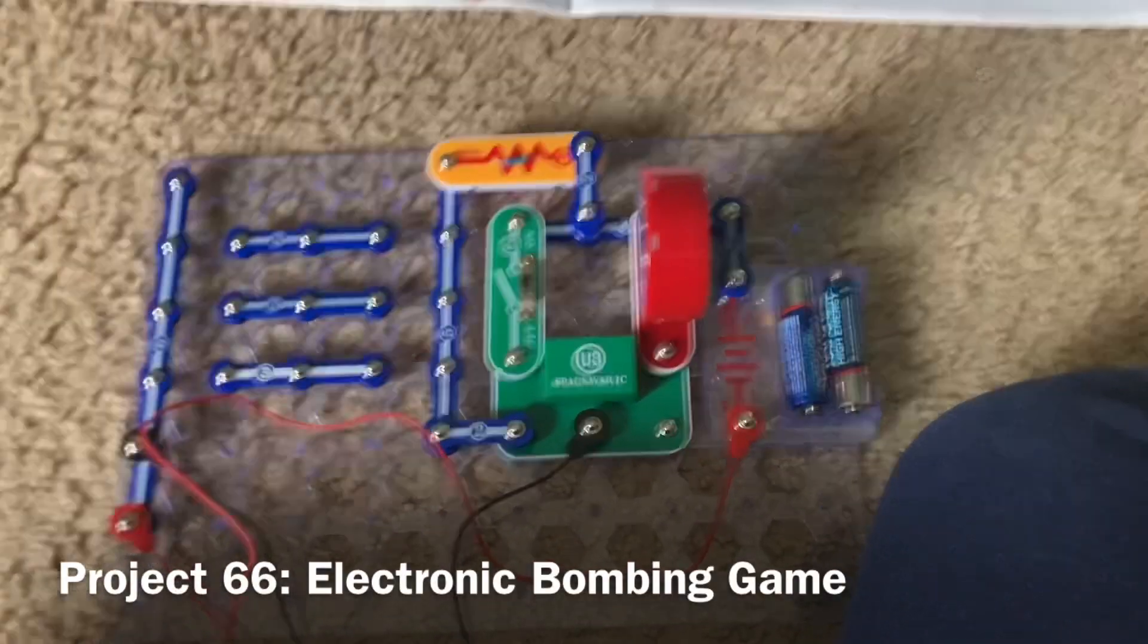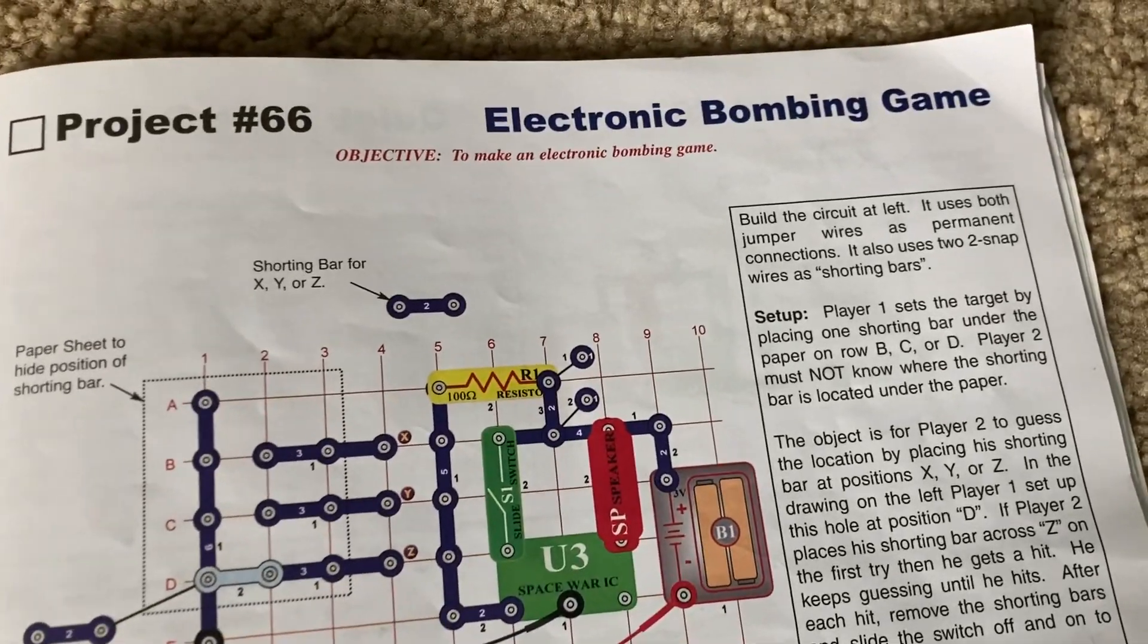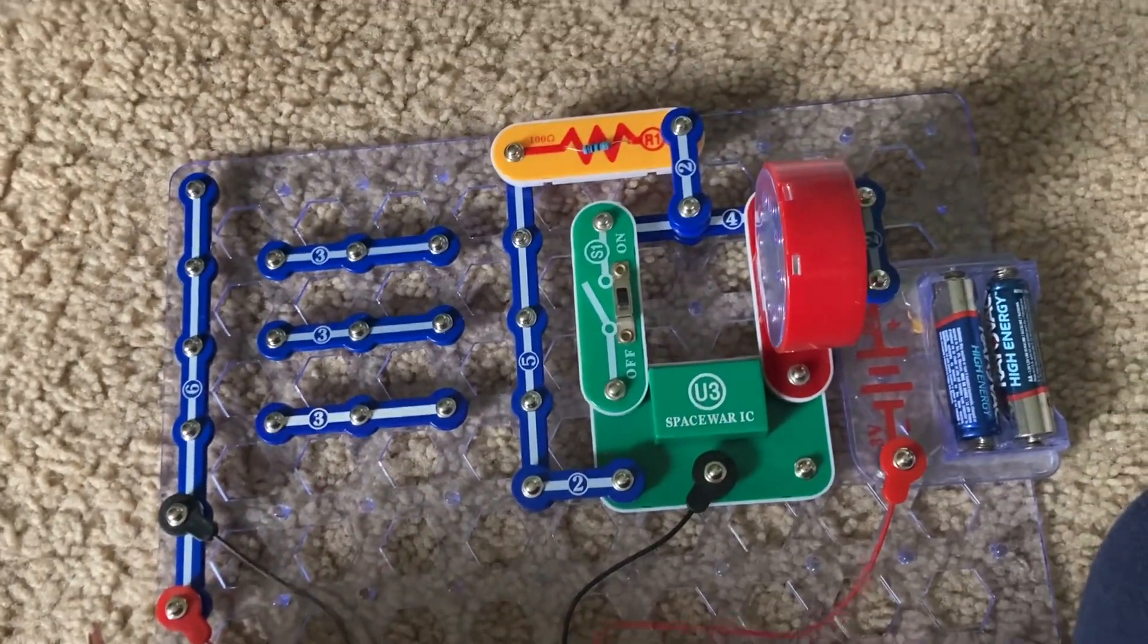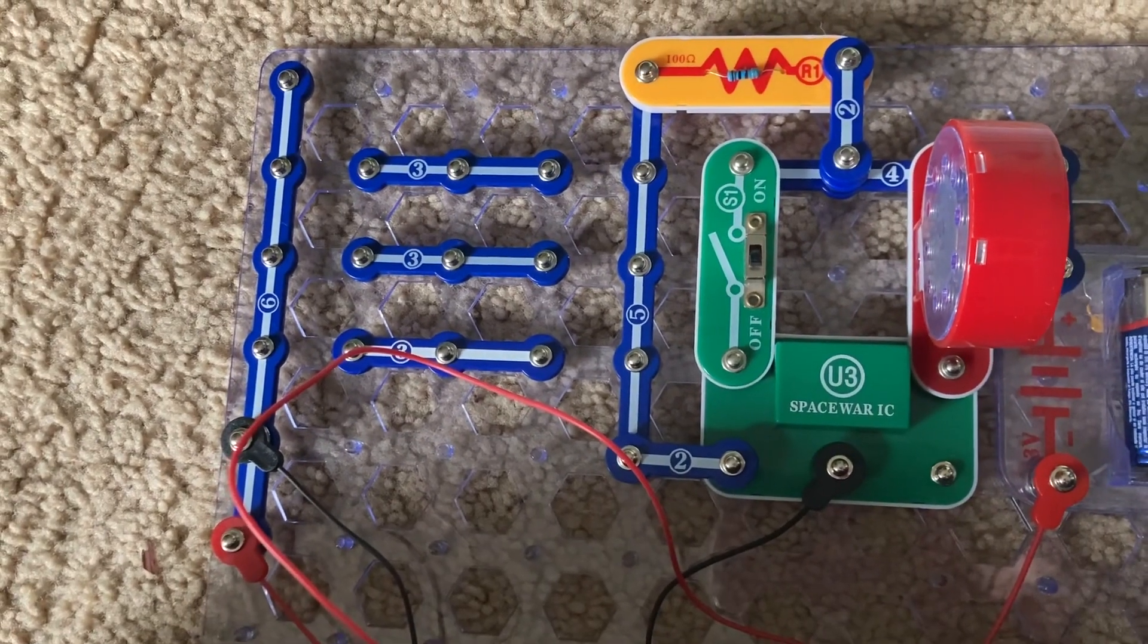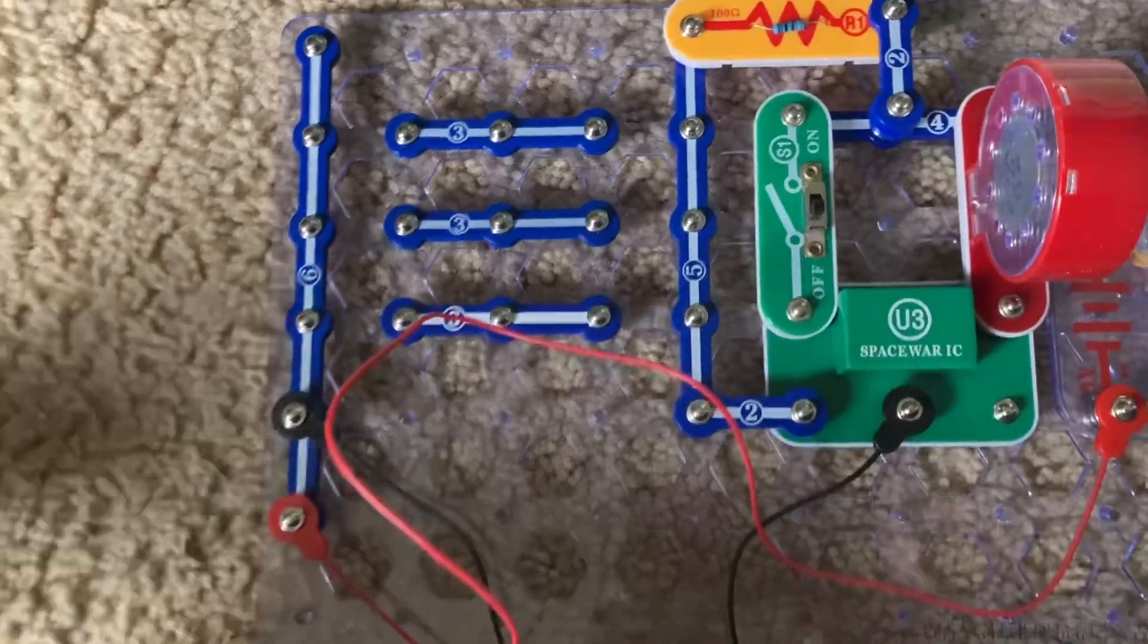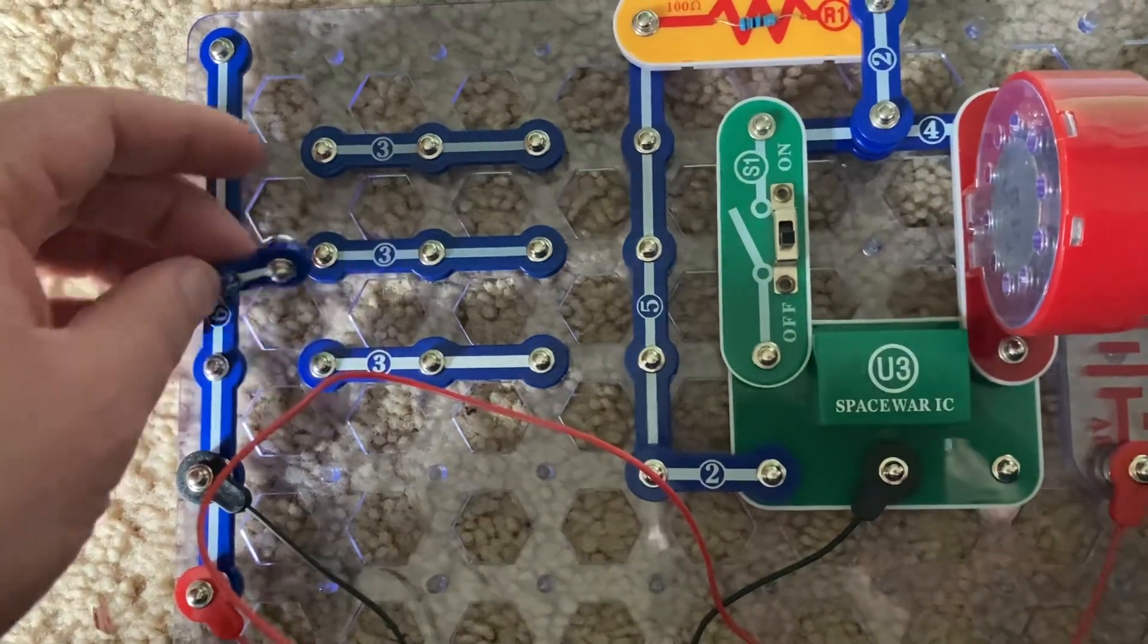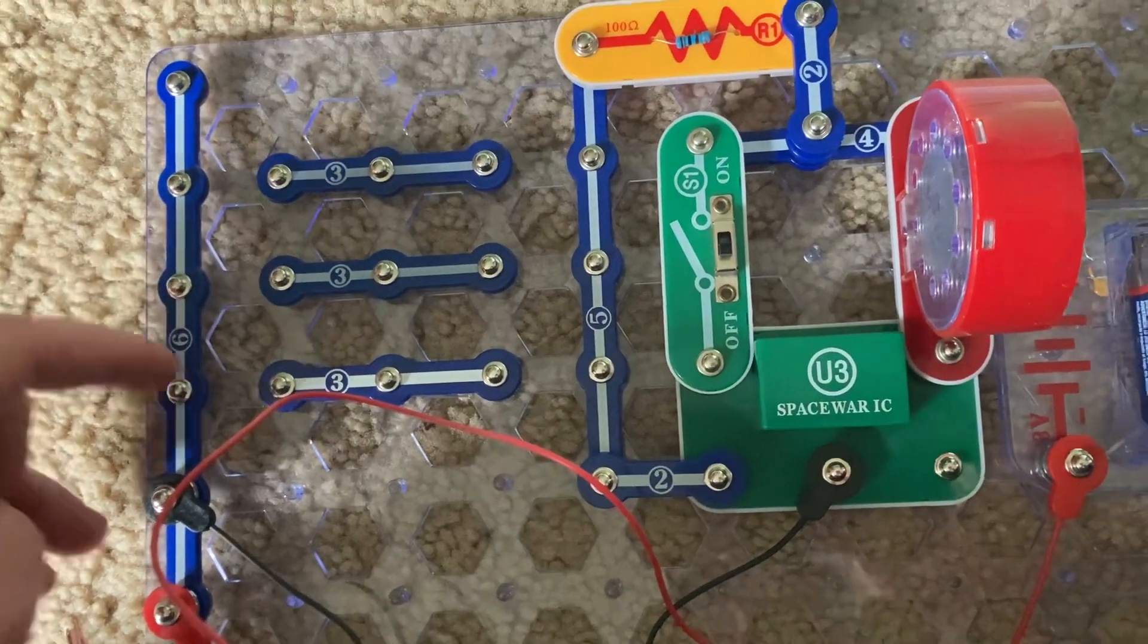Project 66 is a very entertaining circuit. It's called an electronic bombing game. With this circuit, you would have two players, and while the second player looks away, the first player would put a two-snap wire on any of these three points here. Either point B, point C, or point D.